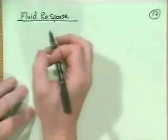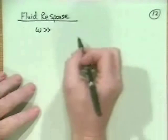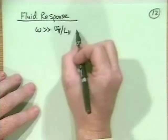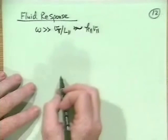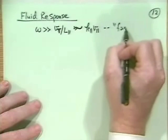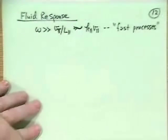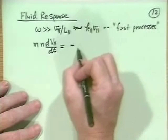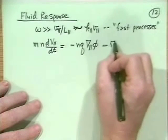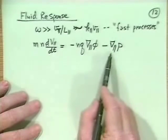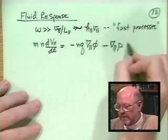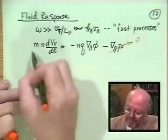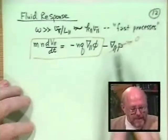In the fluid response, the frequency is much greater than k_parallel v_parallel — the rate at which inhomogeneities along the field are removed. These are fast processes. Our equation is: MN dV_parallel/dt equals minus NQ del_parallel phi minus del_parallel P. Since this is fast compared to thermal motion, and grad P involves T representing thermal motion, we end up neglecting the pressure term.